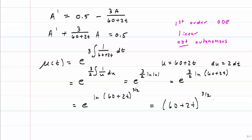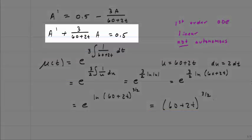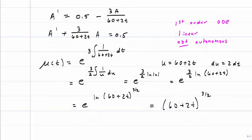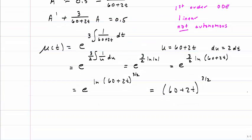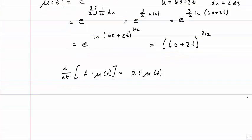So now I'm going to rewrite my original differential equation by multiplying both sides of the equation by the integration factor. And again at the same time, I'm going to rewrite the left hand side as simply d dt of my A times my integration factor. I know what my integration factor is, so I'm going to go ahead and substitute that in. And now I'm going to integrate both sides.